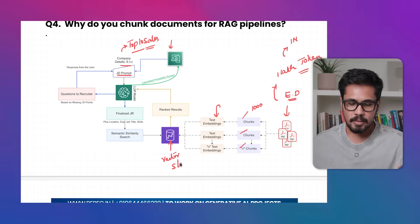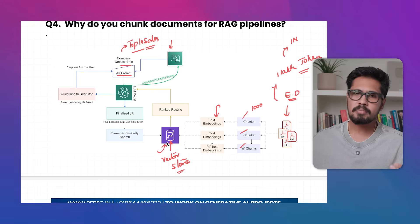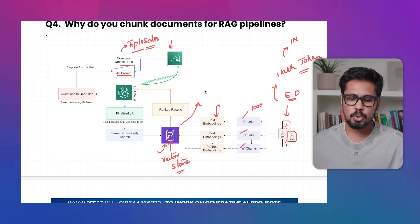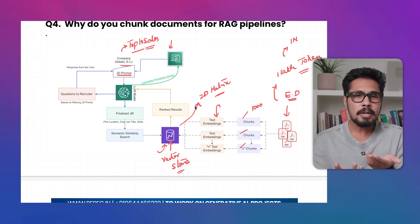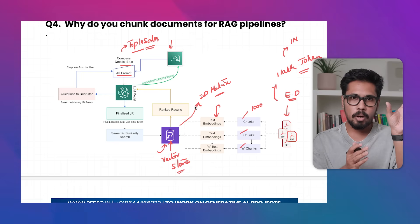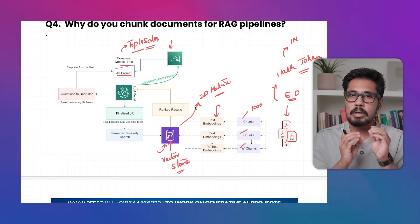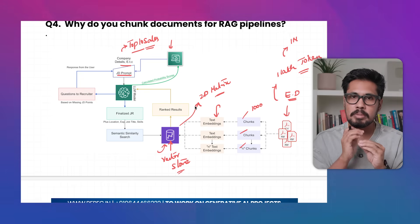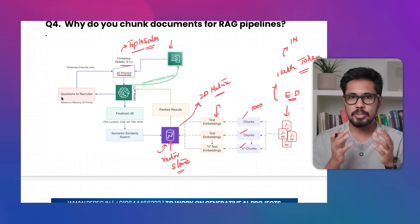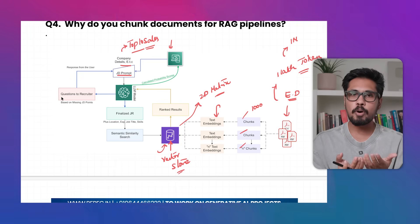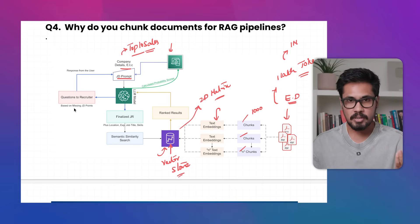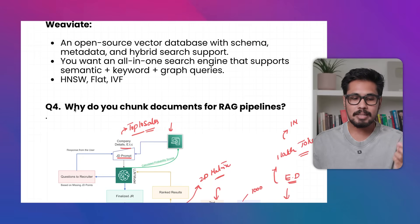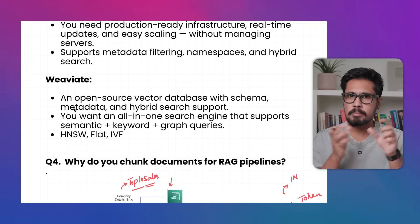A vector store holds text embeddings, which are essentially a two-dimensional matrix. Rather than using SQL queries, based on the user's prompt we perform semantic search. The vector store must contain mathematical equations capable of performing semantic search. We use vector store libraries like FAISS or Chroma, which contain various mathematical equations — such as HNSW, flat, and IVF — to perform semantic search.